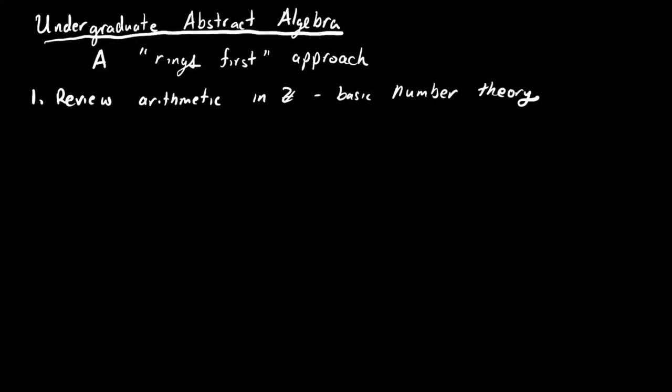The first thing we're going to do is we're going to talk about arithmetic in Z. So review some basic number theory. We'll talk about the division algorithm, we'll talk about divisibility, greatest common divisors, and unique factorization, namely that any integer that's not zero or plus or minus one can be written as a product of primes in some unique way.